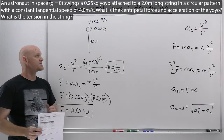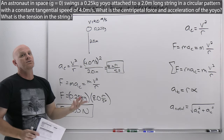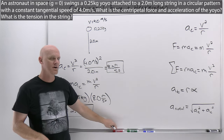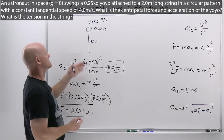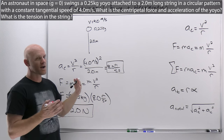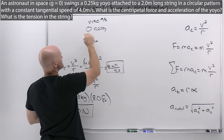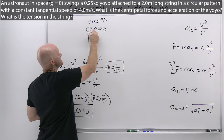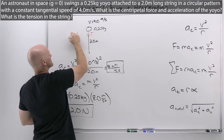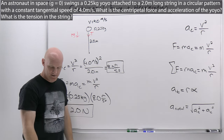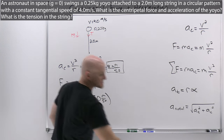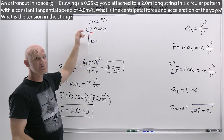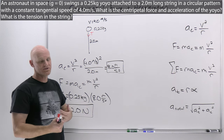The last part of this question asks for the tension in the rope — now we've got a Newton's law of motion question. When setting up a Newton's law of motion question, you start with a free body diagram. For this yo-yo on a string, the tension is pulling straight down toward the center. The problem said the astronaut is in space where gravity is zero, so we're in a weightless environment — there's no weight, and the only force acting on it is the tension in the string pulling toward the center of the circle.